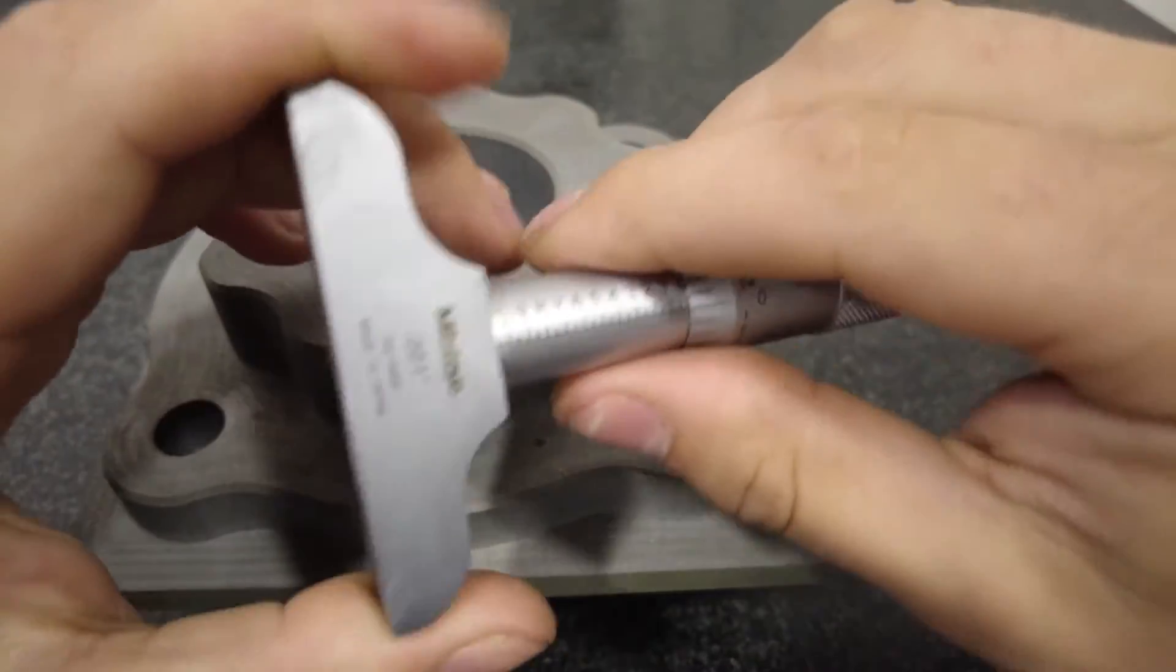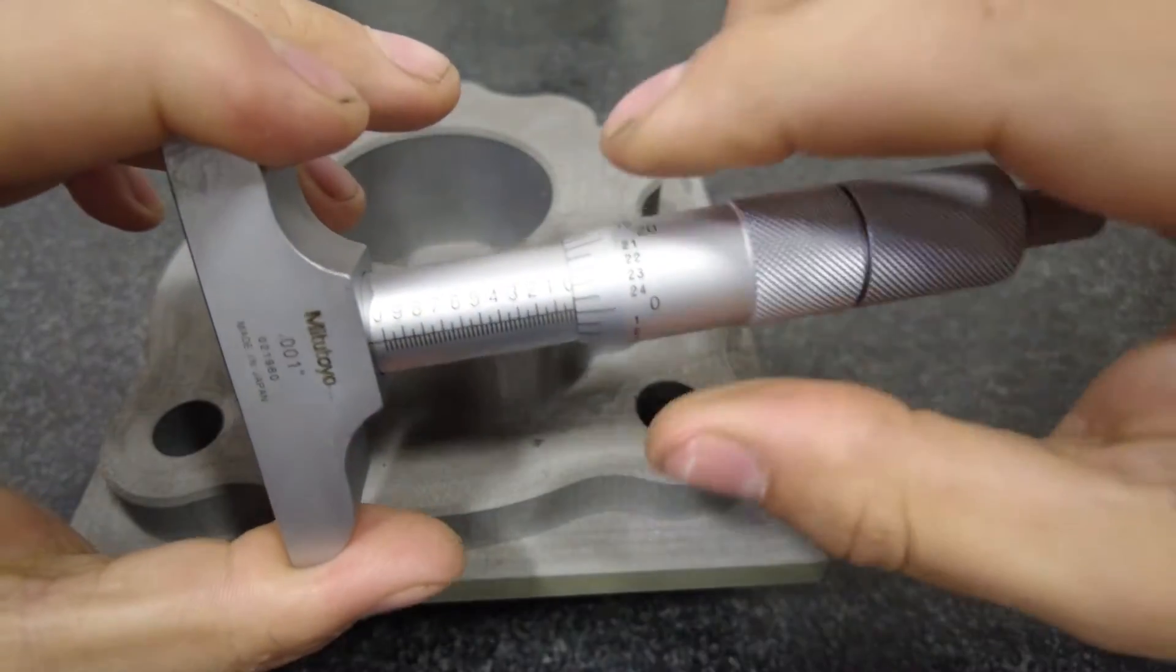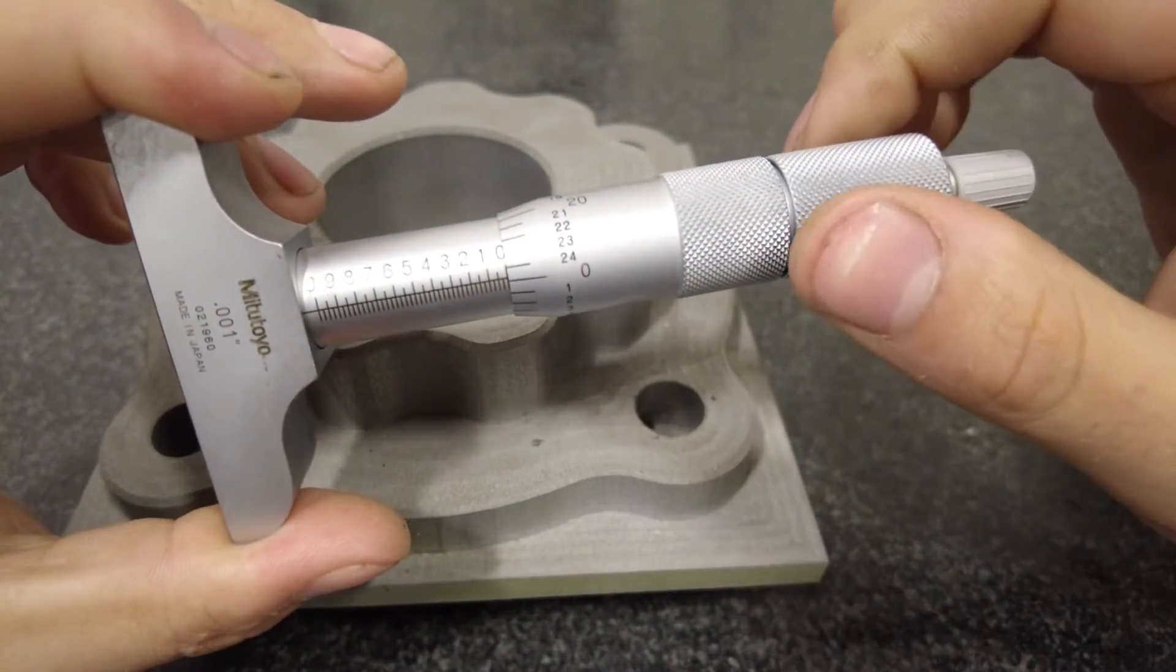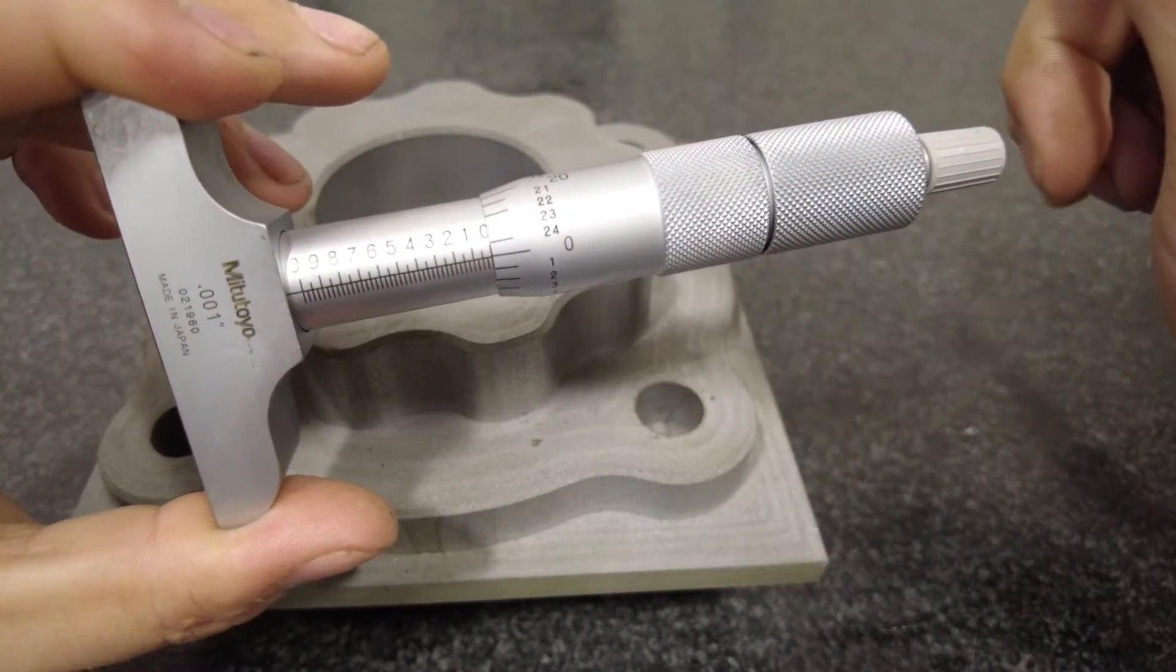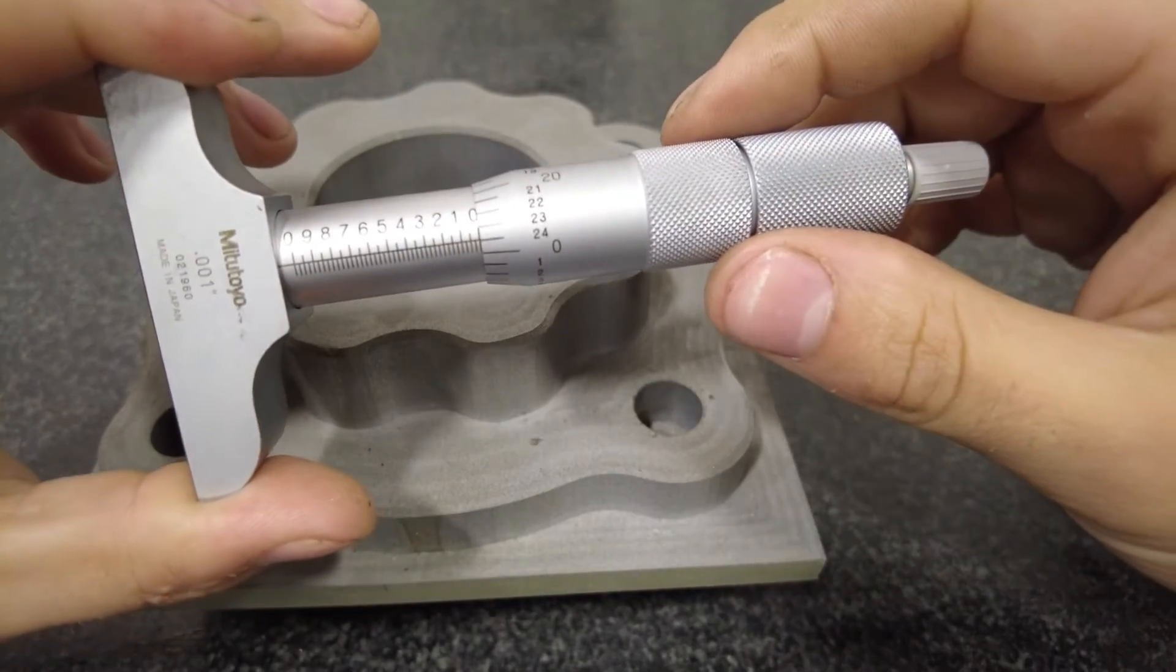You can see right here I'm at zero zero. That's going to be flush on the end there. With the depth rod that we have in now we can read from zero to one inches. To read different measurements you're going to switch out for different depth rods and those are in one inch increments.